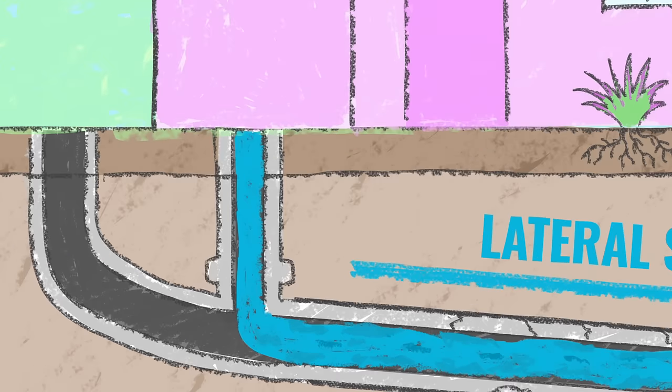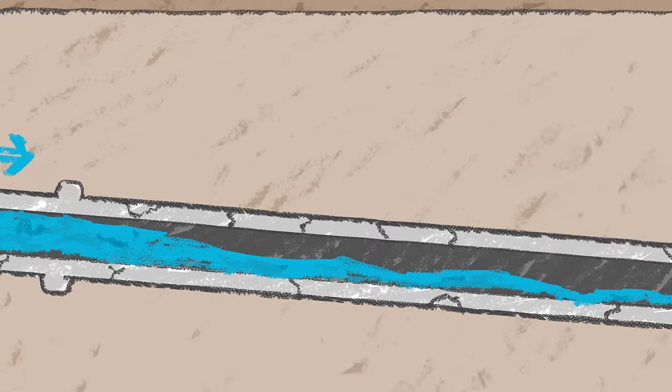The lateral sewer line is a pipe under your yard that carries wastewater from your home to the public sewer system.